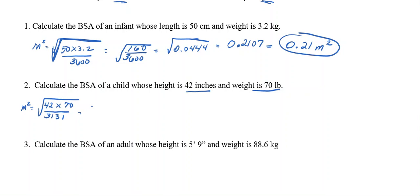So I'm going to do 42 by 70. I get 2,940. Again, dividing that by 3,131. And I get the square root of 0.938997.